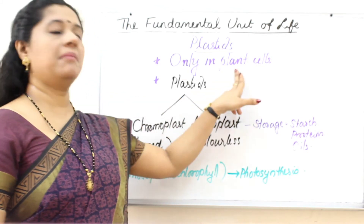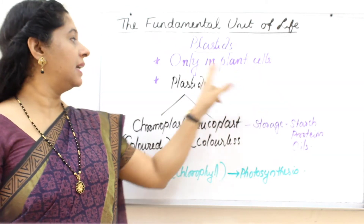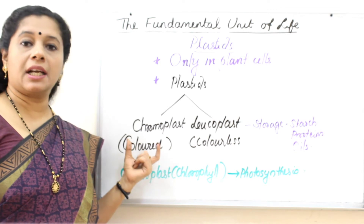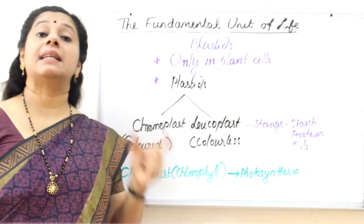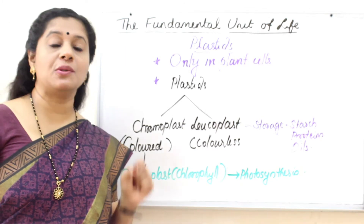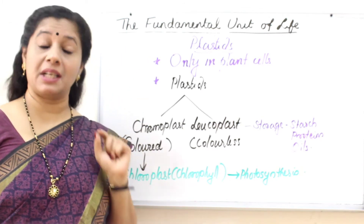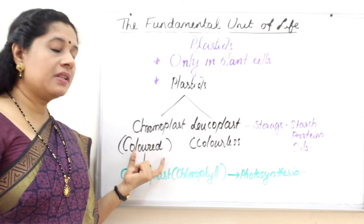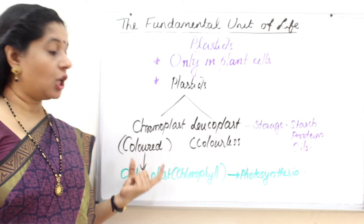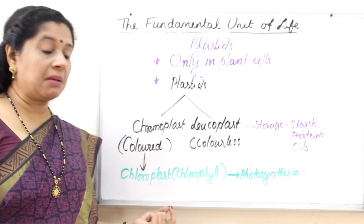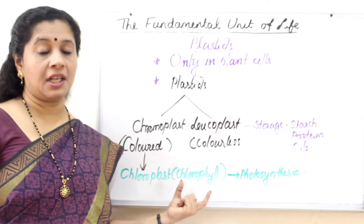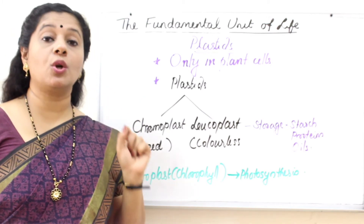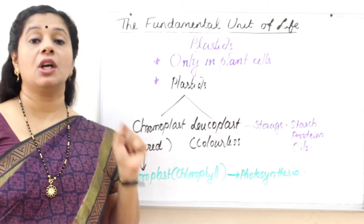Coming to plastids: plastids are only found in plant cells; they are not found in animal cells. Plastids can be classified into two categories. The first group are colored plastids called chromoplasts — chromo means colored, just like the Google Chrome symbol which has many colors. One example of a colored plastid is chloroplast, which is green in color due to a pigment called chlorophyll. You should not confuse these: chlorophyll is the name of the green pigment, whereas chloroplast is the organelle in which chlorophyll is present.